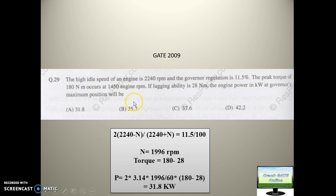So let's see what type of questions they are asking. It is saying the high idle speed of the engine is 2240 RPM and governor regulation is 11.5%. The peak torque of 180 Newton-meter occurs at 1450 engine RPM. If lugging ability is 28 Newton-meter, find the engine power in kilowatt at governor maximum position. Governor regulation is basically governor sensitivity.